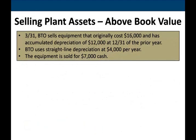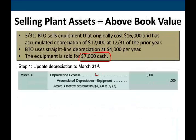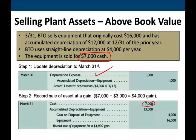Now let's look at the same example except that we sold the asset for $7,000. Cash of $7,000 is greater than the book value of $3,000, so we have a gain of $4,000. Everything else stays the same — we update the asset, debit cash $7,000, credit equipment $16,000, debit accumulated depreciation $13,000, and credit gain on disposal $4,000.